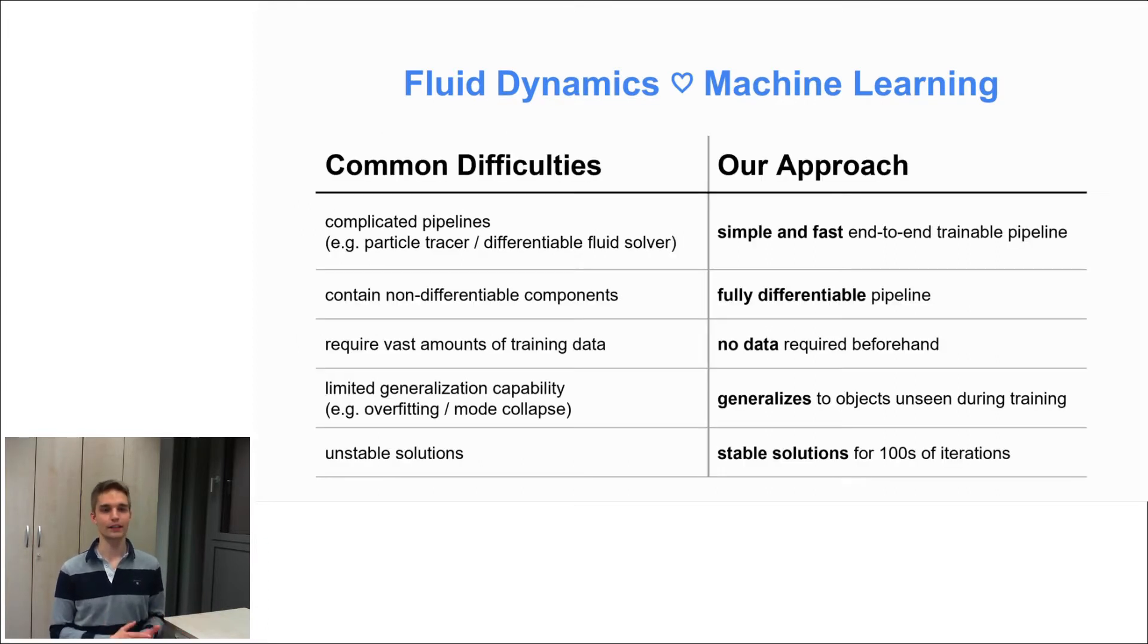But there are also common difficulties with machine learning in this context of fluid dynamics. For example, often complicated pipelines are required that incorporate particle tracers or differentiable fluid solvers, and some of these components might not be differentiable. Also the vast amount of training data can be a problem and the limited generalization capability, for example if you insert new objects into the fluid domain. Another problem could be unstable solutions that blow up after some iterations.